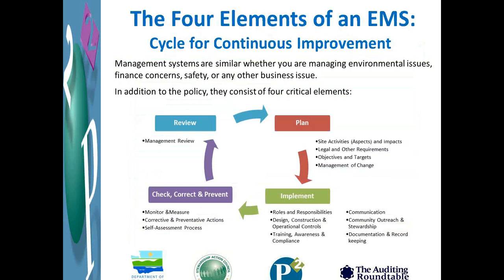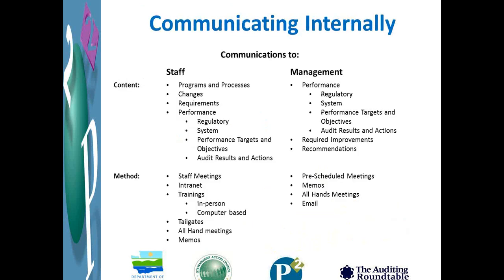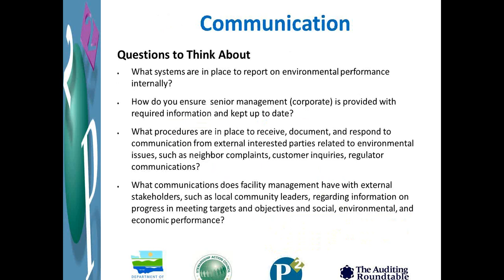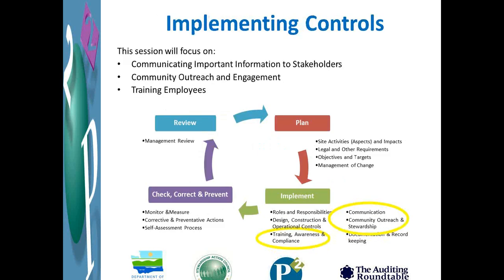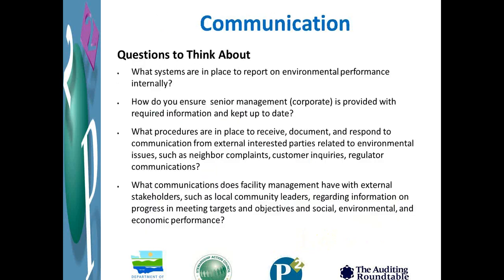Just very briefly, the four elements of an environmental management system — we've gone through these before, so I'm not going to reinvent them here. The important part for today is that we'll be talking about communication, community outreach, and training and awareness under the implementation phase. The first thing we're going to talk about is communication.